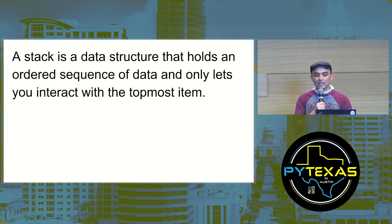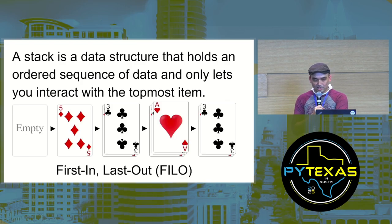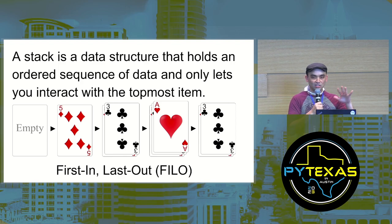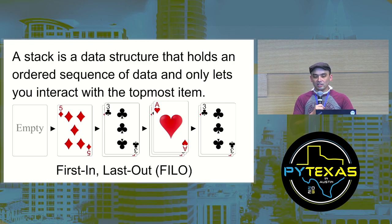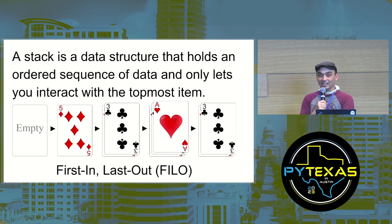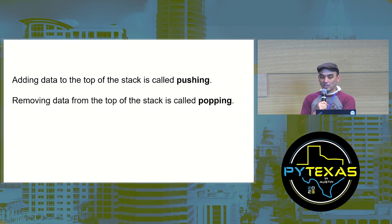Stacks are one of the simplest data structures in computer science. A stack is a data structure that holds an ordered sequence of data and only lets you interact with the topmost item. Think of it as a stack of playing cards — you can add cards to the top and remove cards from the top, but you can't insert them into the middle. The first card you put on the stack will be the last card removed, so we call a stack a FILO data structure — first in, last out.